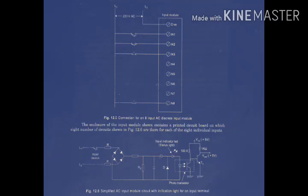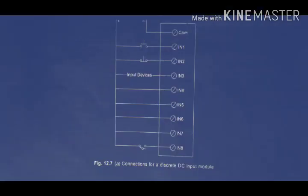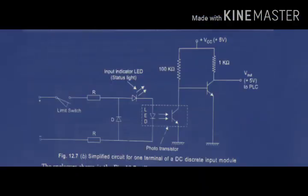So this is the role of the input module. This was AC input and there is also DC input. For AC input module, figure 12.6 applies. When you use DC input, you don't need a rectifier — in figure 12.7, this is DC input with positive and negative, so the rectifier circuit is not needed. The enclosure shown in 12.7 will contain 8 such circuits, giving 8 DC inputs.